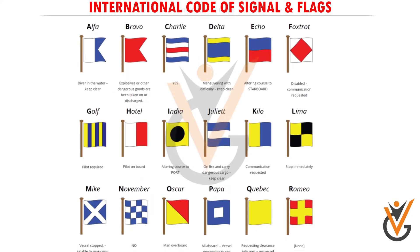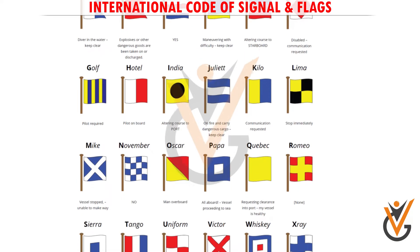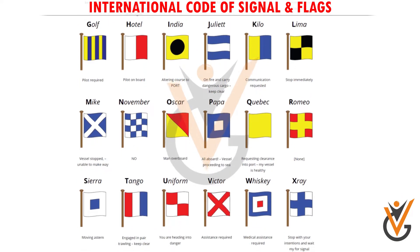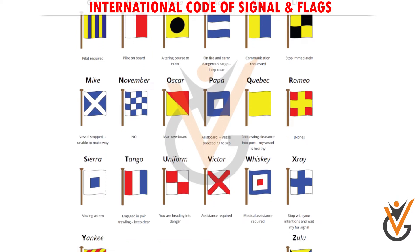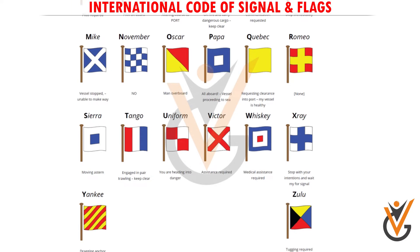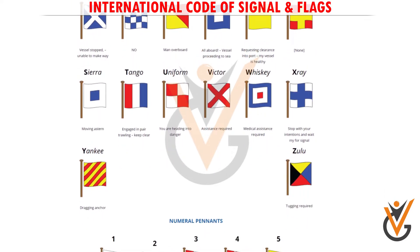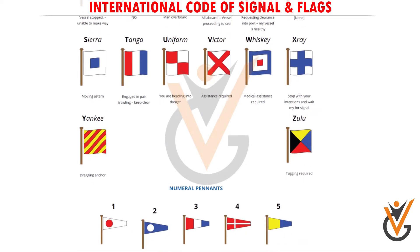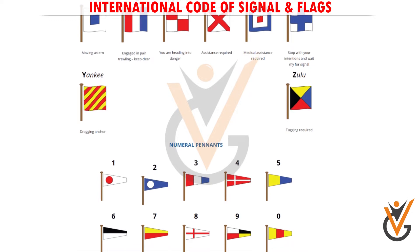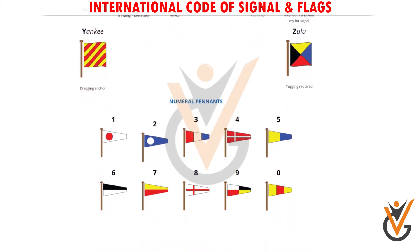International Code of Signals and Flags. The International Code of Signals is an international system of signals and codes for use by vessels to communicate important messages regarding safety of navigation and related matters. The flags are one of the components of ICS. The signal flags consist of all alphabetic flags and selected numerical flags.